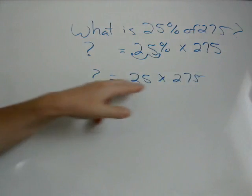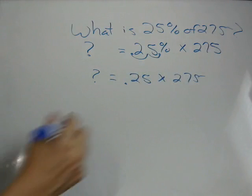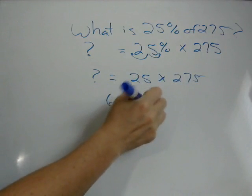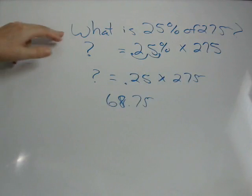If you plug 0.25 times 275 into your calculator, you're going to get the answer is 68.75. So, what is 25% of 275? 68.75.